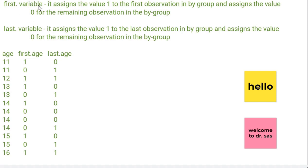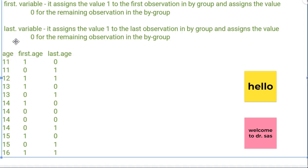First.variable — what does it do? It assigns the value 1 to the first observation in the by group, and assigns the value 0 for the remaining observations in the by group. I have taken one example with one variable called age. There are multiple age values: 11, 12, 13, 14, 15, and 16.